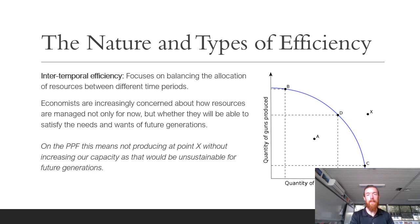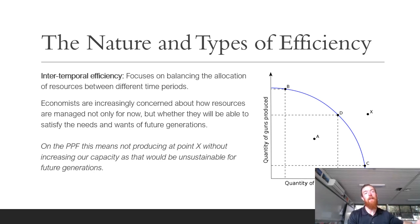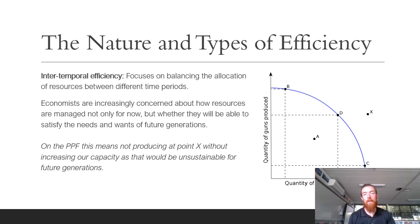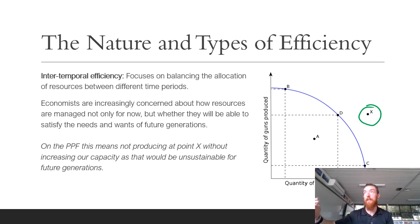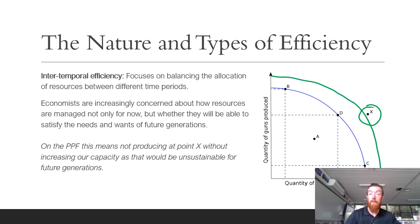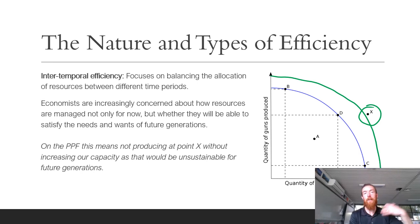Intertemporal efficiency focuses on balancing the allocation of resources between different time periods, usually now and the future. Economists are increasingly concerned about how resources are managed not only for now but for future generations, because we need to satisfy their needs and wants as well. On the PPF, producing at point X without increasing our capacity would be unsustainable for future generations. We need to increase the curve out to that point through things like education and training and new technology, which increases our productive capacity and makes us more intertemporally efficient.